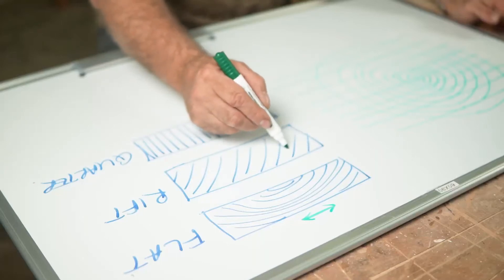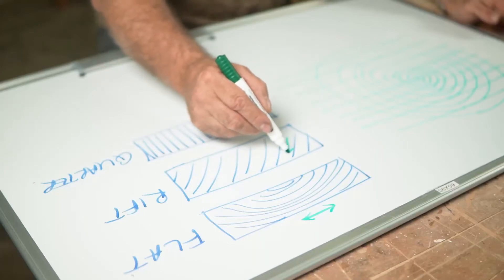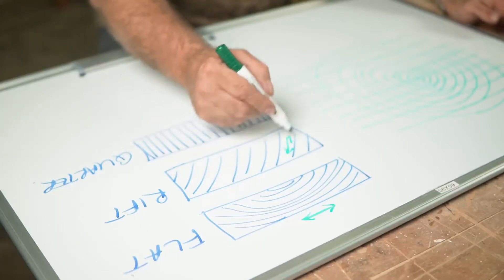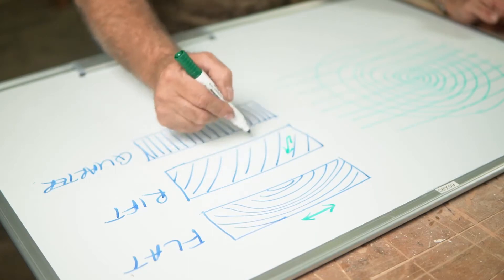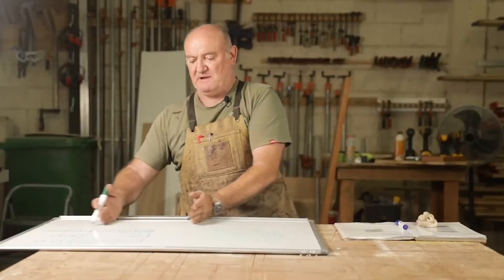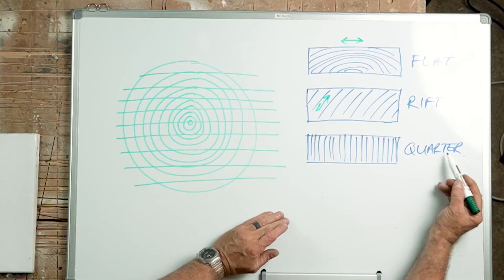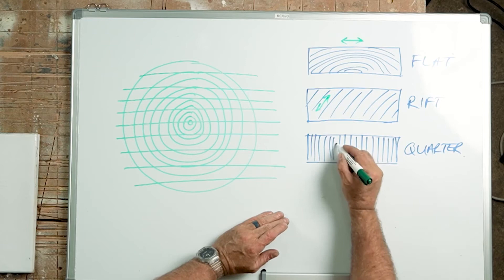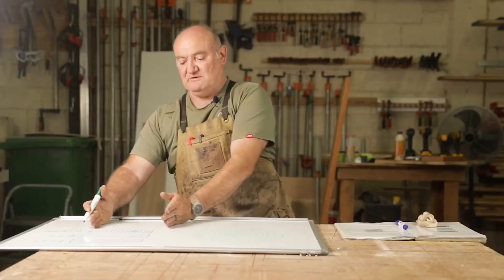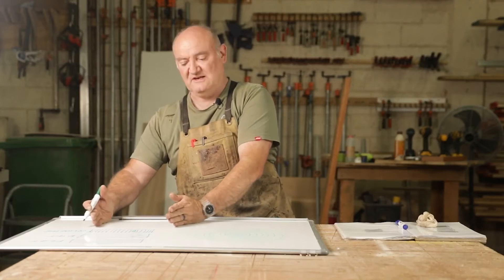If you've got something that's moving more at 45 degrees, it's less likely to expand and contract along its width — it's a little bit more stable. Something that's quarter sawn expands and contracts in the other direction, so it's incredibly stable along its width — it's the most stable kind of wood.